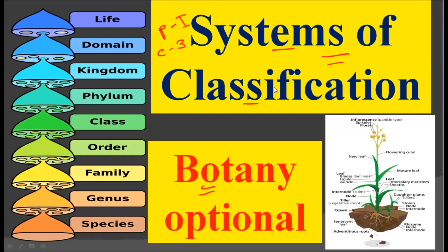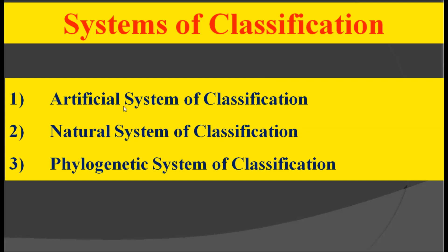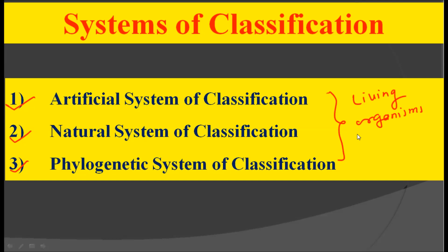So let us see the systems of classification. In today's video we are going to see three systems of classification. First is the artificial system of classification, second is the natural system of classification, and third is the phylogenetic system of classification. All three systems try to classify living organisms on the basis of certain characters, and taxonomy is very important to classify living organisms in order to study them properly.